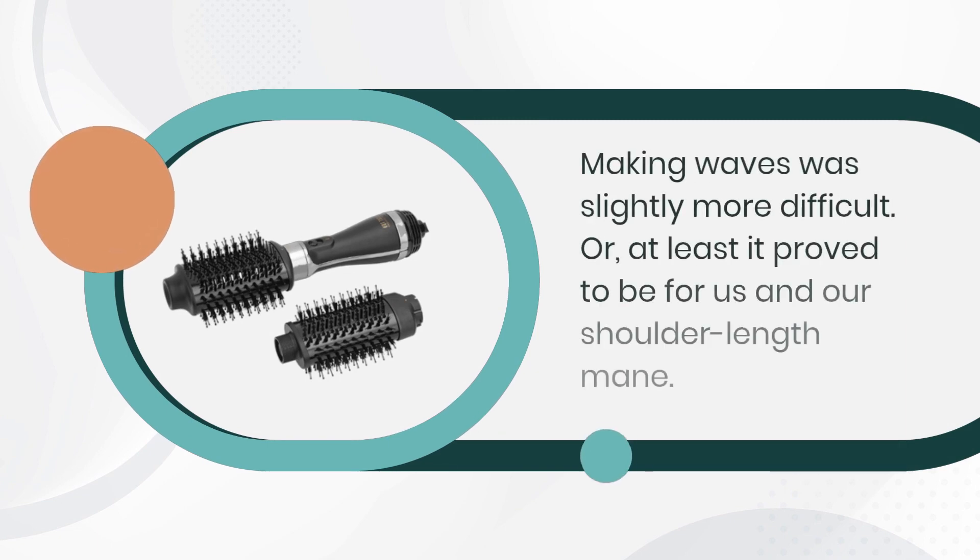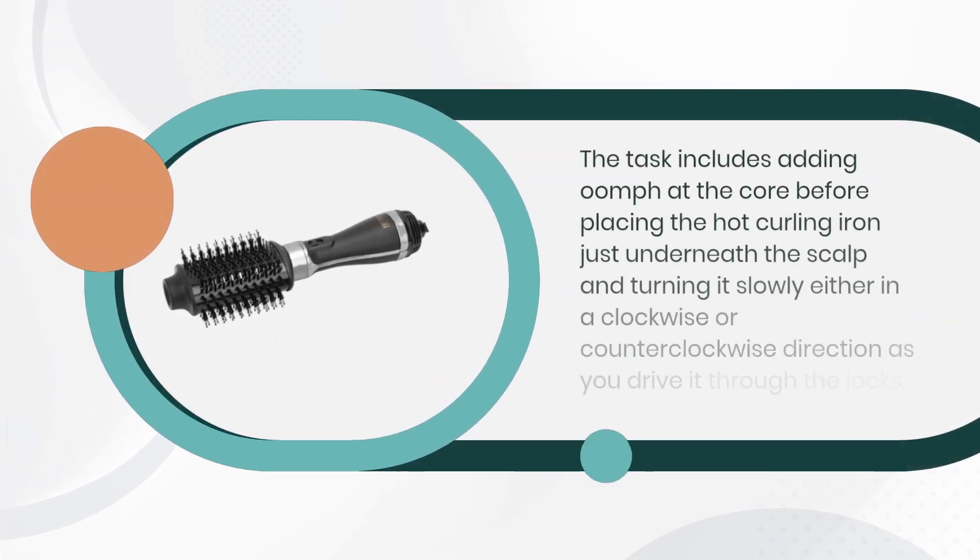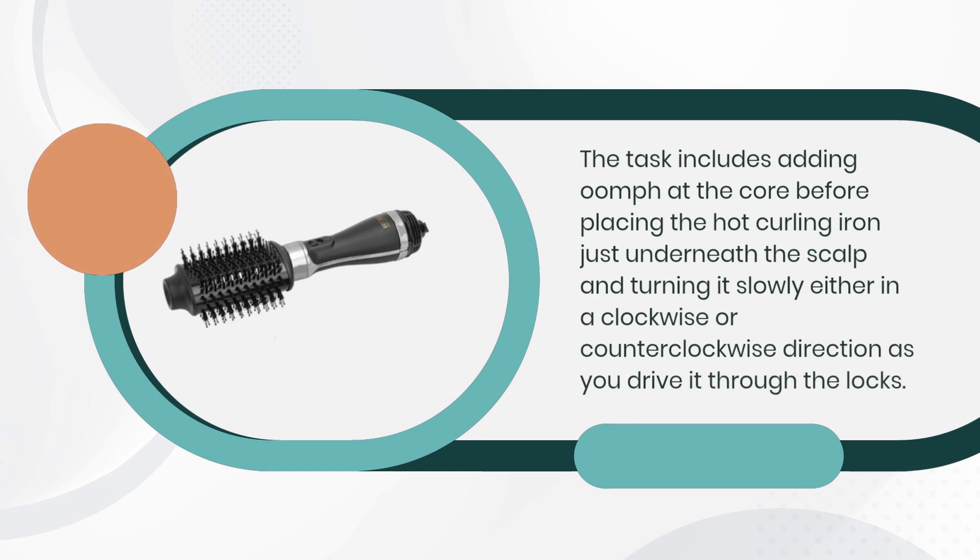Making waves was slightly more difficult. Or, at least it proved to be for us and our shoulder length mane. The task includes adding oomph at the root before placing the hot curling iron just underneath the scalp and turning it slowly either in a clockwise or counter-clockwise direction as you drive it through the locks.